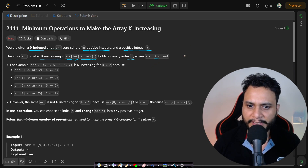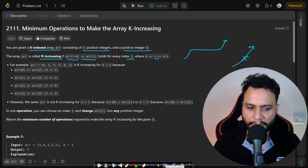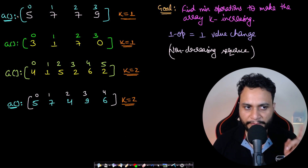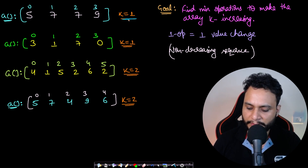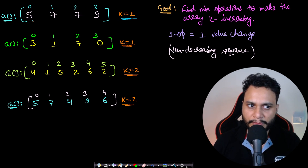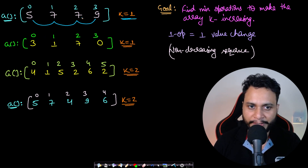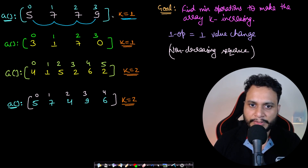Basically, they are trying to make a non-decreasing type of curve — not strictly increasing, but non-decreasing. In the first example, the elements are 5, 7, 7, 9 with k equals 1. K equals 1 means you have a single list with jump size 1: [5, 7, 7, 9]. Is it non-decreasing? Yes — 7 ≥ 5, 7 ≥ 7, and 9 ≥ 7. So zero operations are needed.